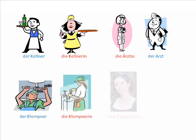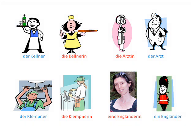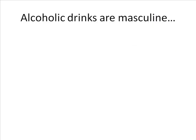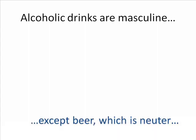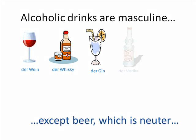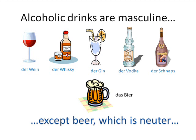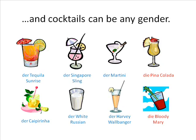This also applies to nationalities. I am an 'Engländerin', which is a feminine noun, but a man from England is an 'Engländer', which is a masculine noun. Another of my favourite rules is that all alcoholic drinks are masculine, with the exception of beer, which is neuter. So it's 'der Wein', 'der Whisky', 'der Gin', 'der Wodka', 'der Schnaps', and 'das Bier', although this doesn't apply to the names of individual cocktails, which can be other genders.